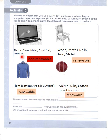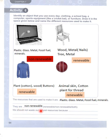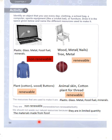Let's talk about the computer. The resources used to make it are plastic, glass, metal, fossil fuel, and minerals. They are non-renewable. We should not waste our natural resources because they are in limited quantity. The materials made from fossil fuels like plastic and glass are a big cause of pollution.